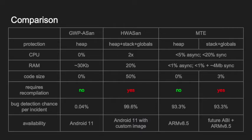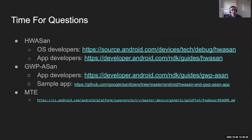Here is a high-level overview of all these options. MTE is a future option with no hardware available right now. GWP-ASan is available in Android 11, doesn't require recompilation, has very small overheads, but small bug detection chance per incident. Given enough time and a large user base, you will get all your bugs eventually. HWASan requires rebuilding, is significantly slower, but is much more comprehensive with a very high chance of detecting a bug. MTE is a strict improvement on GWP-ASan; MTE stack and global tagging requires compilation and is more of a future consideration.